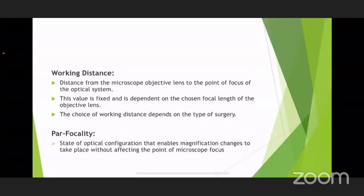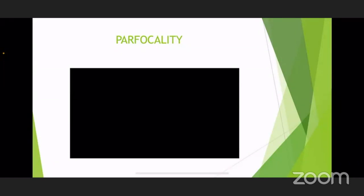The working distance concept is the distance between the objective lens to the point of focus at which we are working. This is fixed depending on the type of surgery. An important concept for postgraduates to know is par-focality, which means the state of conjugation that enables magnification changes without causing change in the point of focus. Par-focality means: first bring the microscope to the highest magnification and bring the object into focus; then go to minimum magnification and bring the object into focus again. Once this has been done, we will not need to change the gross focus during surgery — all settings will be done by fine focus on the foot pedal control.